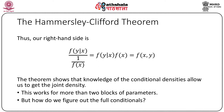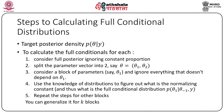The theorem shows that knowledge of the conditional densities allows us to get the joint density. This works for more than two blocks of parameters. Now, the steps to calculating full conditional distributions: we have a target posterior density, then we calculate the full conditional for each. We consider the full posterior ignoring the proportionality constant. We split the parameter vector into blocks, consider one block and ignore everything that does not depend on it. We use knowledge of the distribution to identify the normalizing constant and obtain the full conditional distribution. We repeat the steps for other blocks and generalize to K blocks.